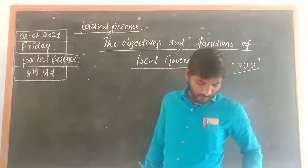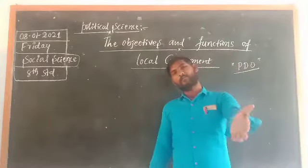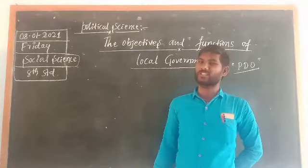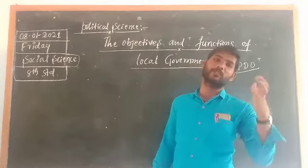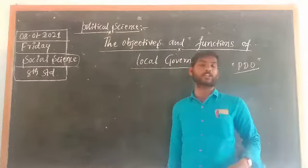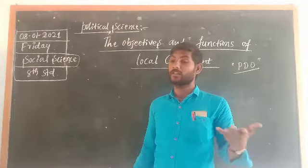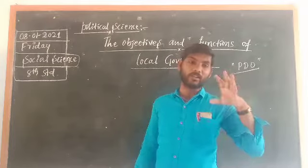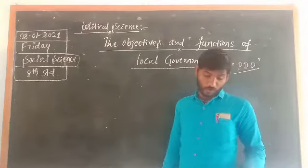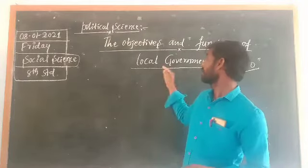The second objective is to provide the knowledge of administration to common people. As we have already observed recently, in the Gram Panchayat elections, so many uneducated people participated and they won in that election. And they know very well about the organization of the locality, because they immediately understand what facilities they have to take from the government. So providing knowledge of administration to common people is the main intention of this local government.